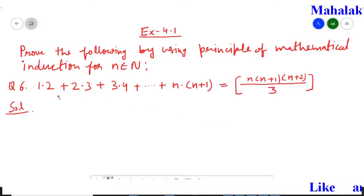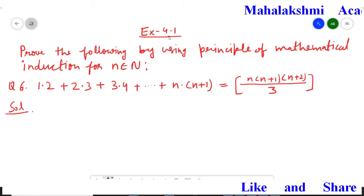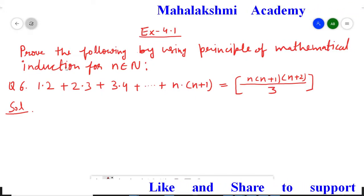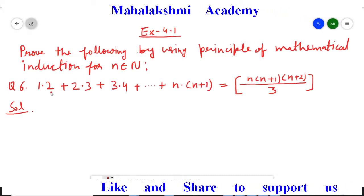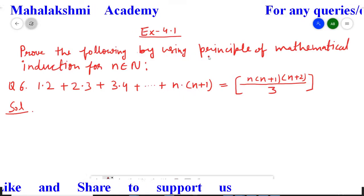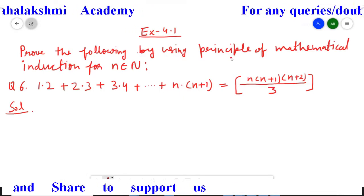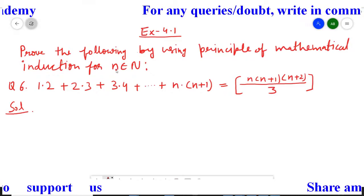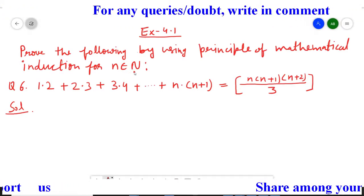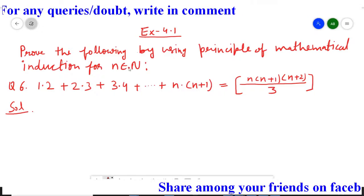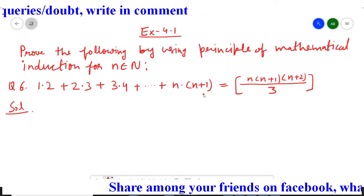Hello everyone. I am going to explain question number 6 from exercise 4.1, and this question belongs from our class maths. Here one mathematical statement is given to us and we have to prove this mathematical statement with the help of the principle of mathematical induction for all n belonging to capital N, where capital N means the set of natural numbers — that is, all positive numbers.